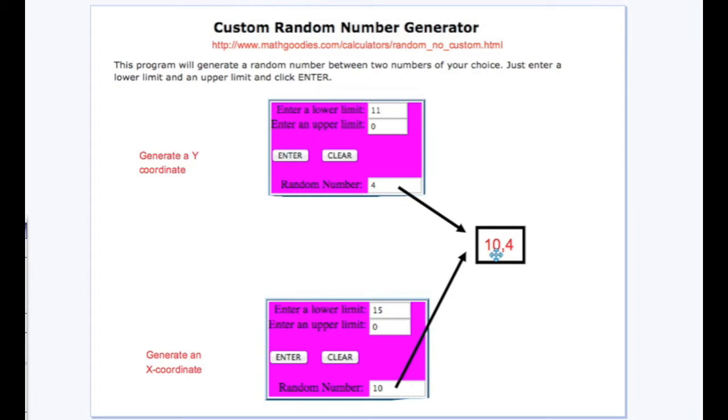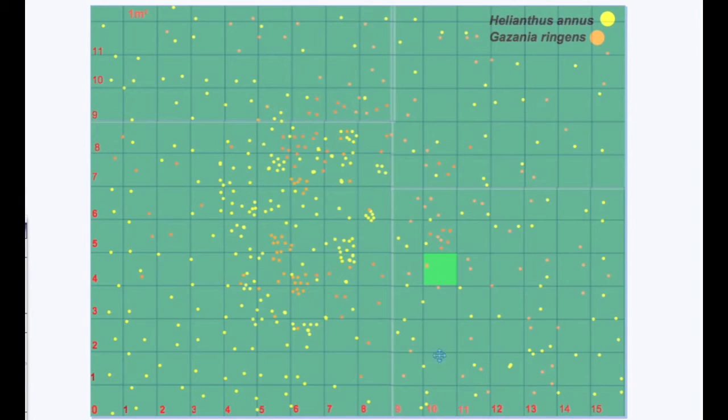Using the coordinates 10, 4, they took this sample: 10 on the x axis, 4 on the y axis, with this point here being identified and the quadrat placed on the upper right hand area of that point to occupy one square meter. In this particular sample we can see one single Gazania plant being present within the one square meter plot.